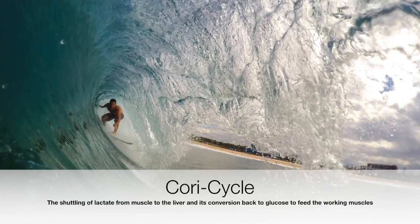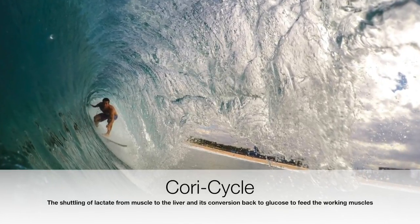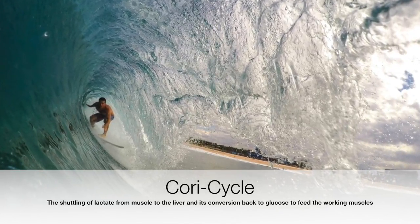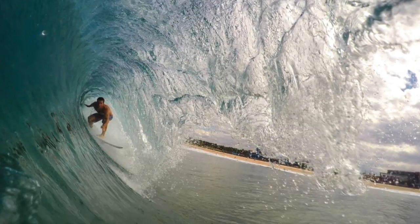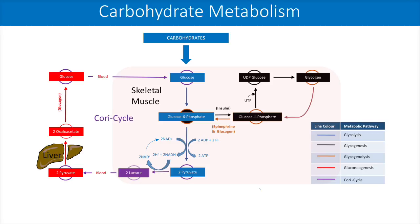The shuttling of lactate from muscle to the liver and its conversion back to glucose is termed the Cori cycle. In short, the Cori cycle highlights the interaction between two major metabolic pathways, namely glycolysis and gluconeogenesis.